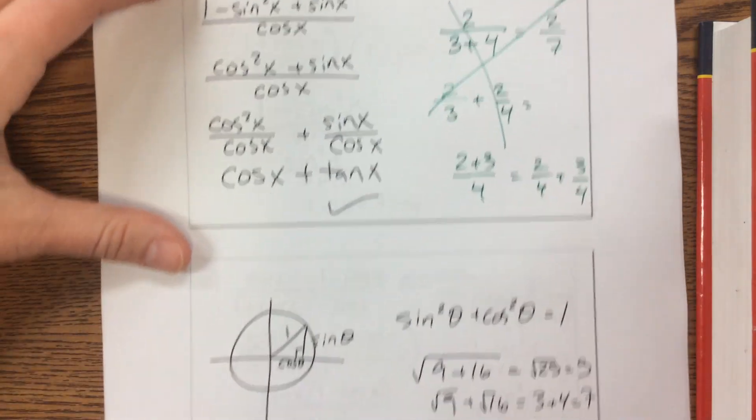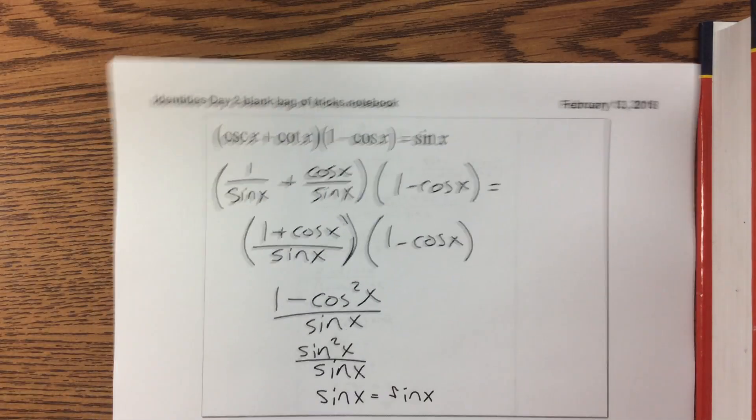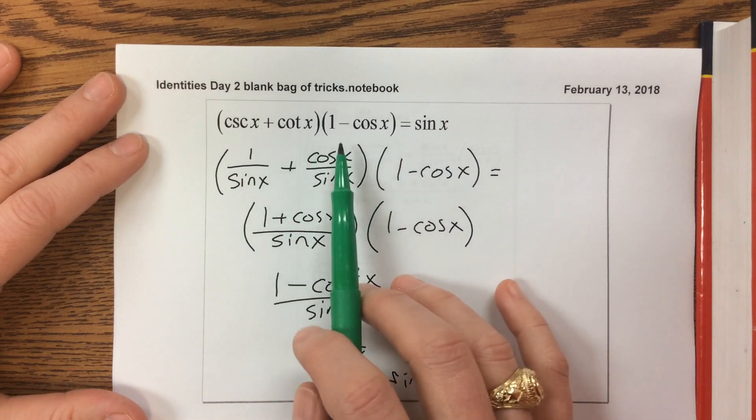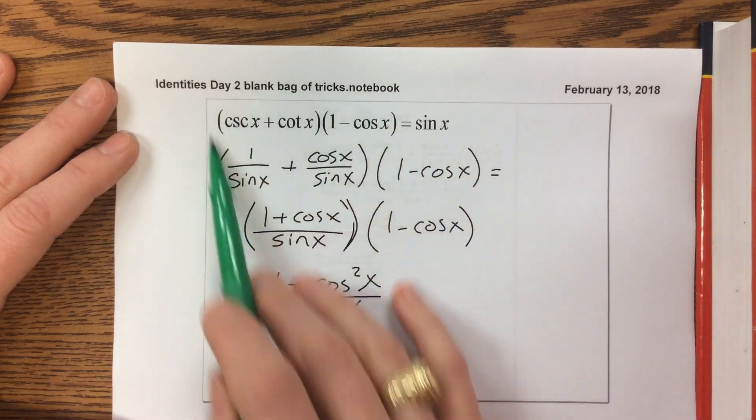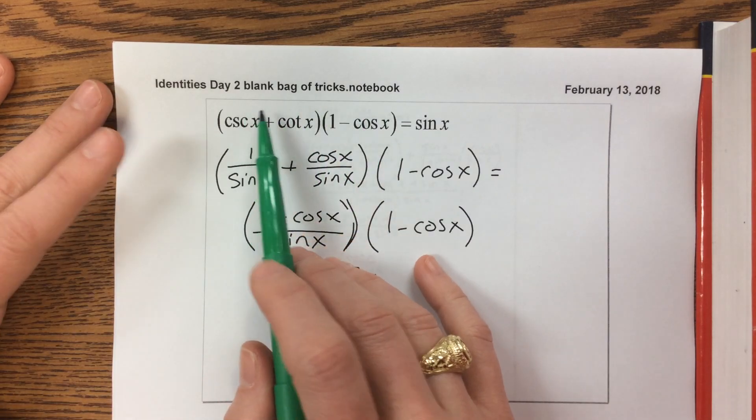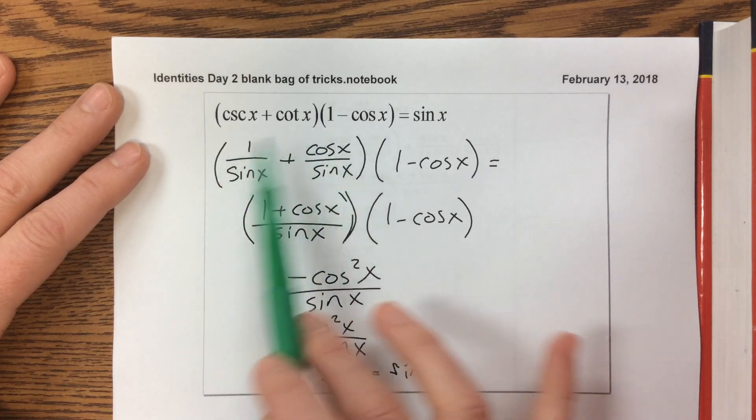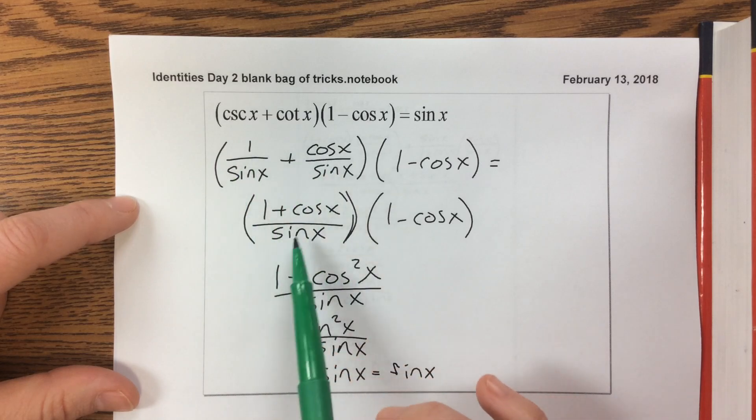The next one we looked at, we saw this was cosecant x plus cotangent x times 1 minus cosine. Obviously, there's more stuff happening on the left-hand side, so we started there. And what we realized is that we can write everything, often a good strategy is to write everything in terms of sine and cosine. So I ended up getting, and then they already had a common denominator.